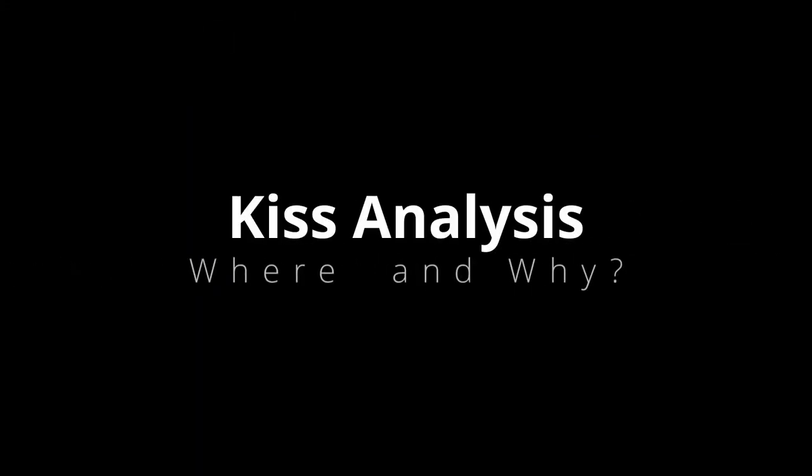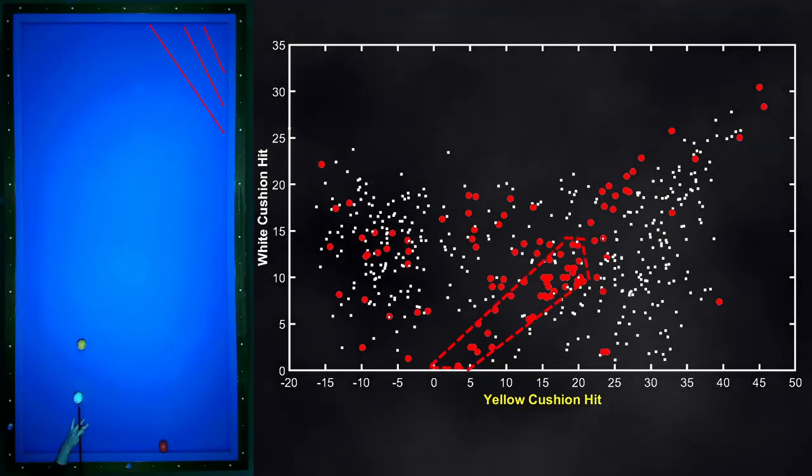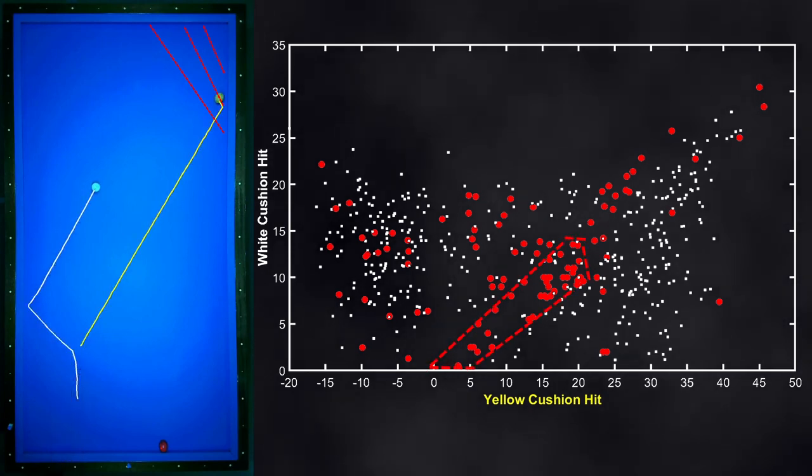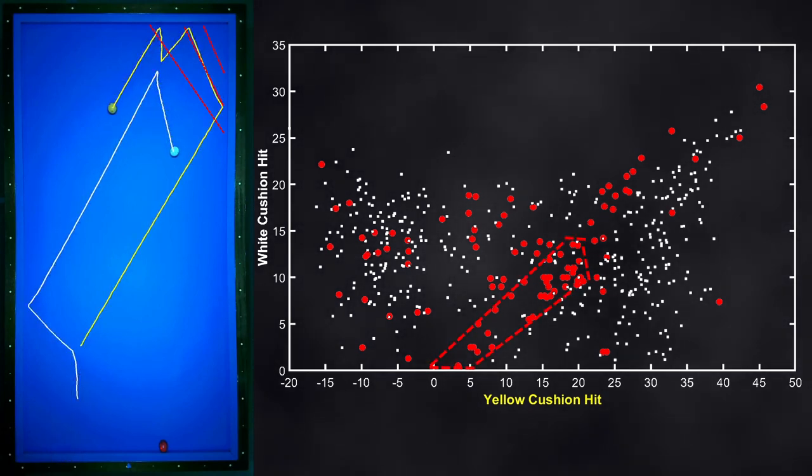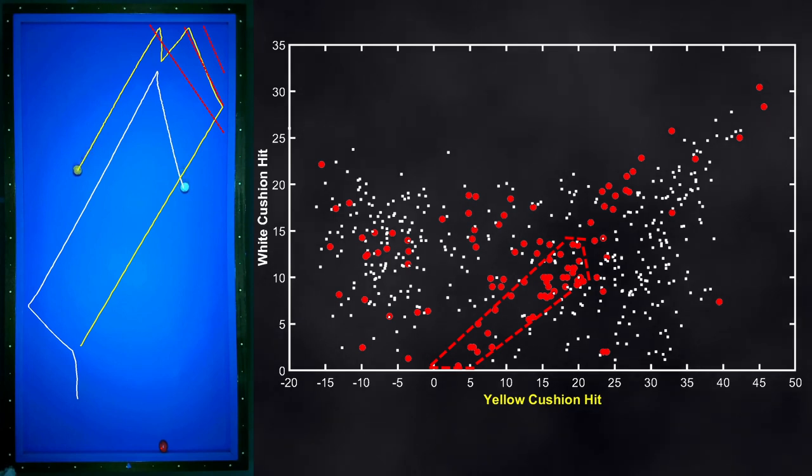From the resulting diagram I see there's a large kiss area that runs diagonally. Both balls run into each other frontally in this area.